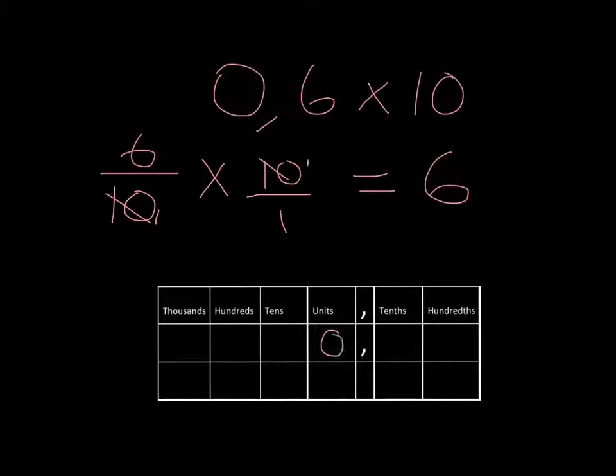Let's put this into a place value table just so we can see what's going on. When we multiply 0.6 by 10, we get the answer of 6. This makes sense because in our place value table, every time we go up, we're basically multiplying by 10. So what happens is if you take the 0.6 and you multiply it by 10, this just becomes 6 units instead of 6 tenths.